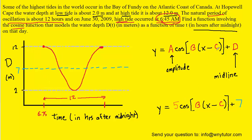Next, we find the value of C. C is simply the x-coordinate of where your curve begins its cycle. The way we have drawn the curve, it began at the high tide point, and the x-coordinate of that starting point is 6.75. So we plug in 6.75 for the value of C.